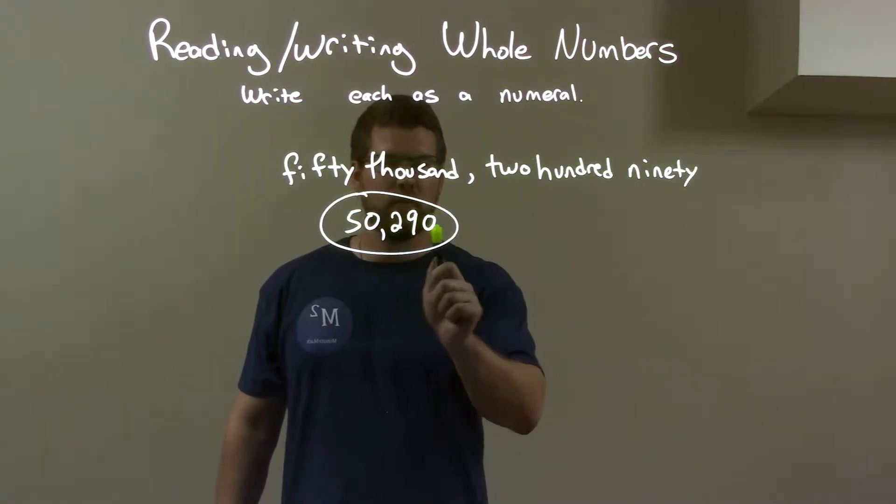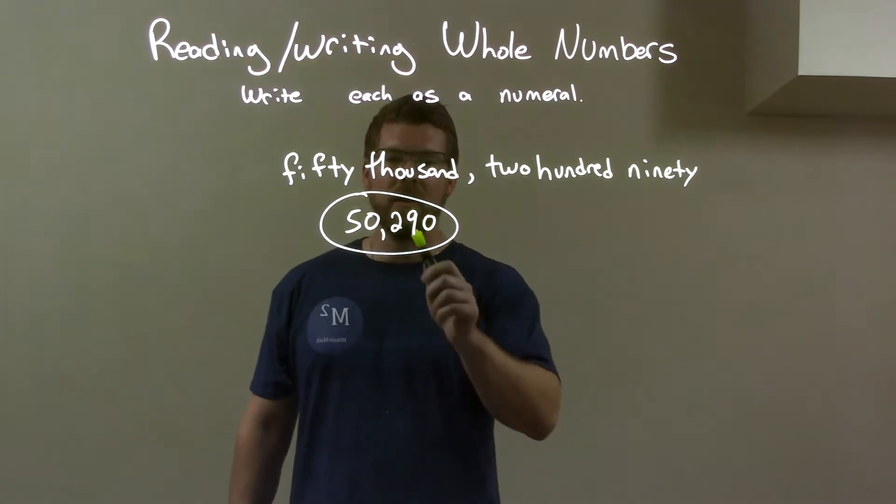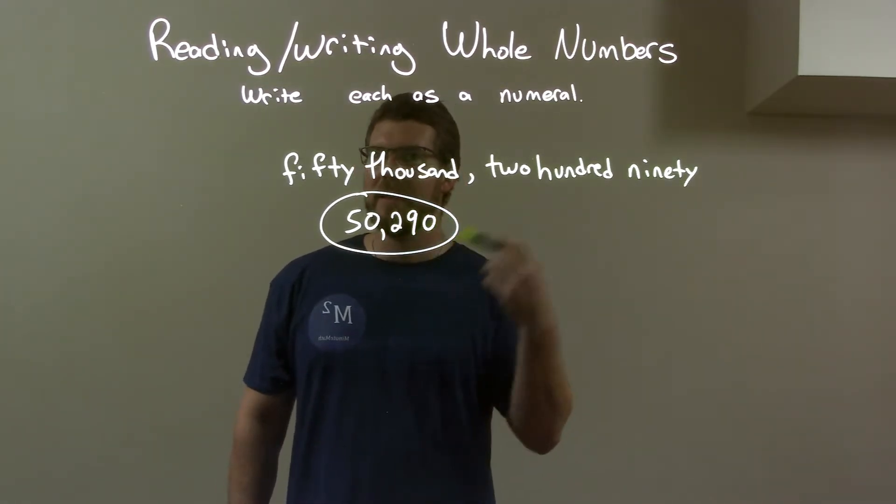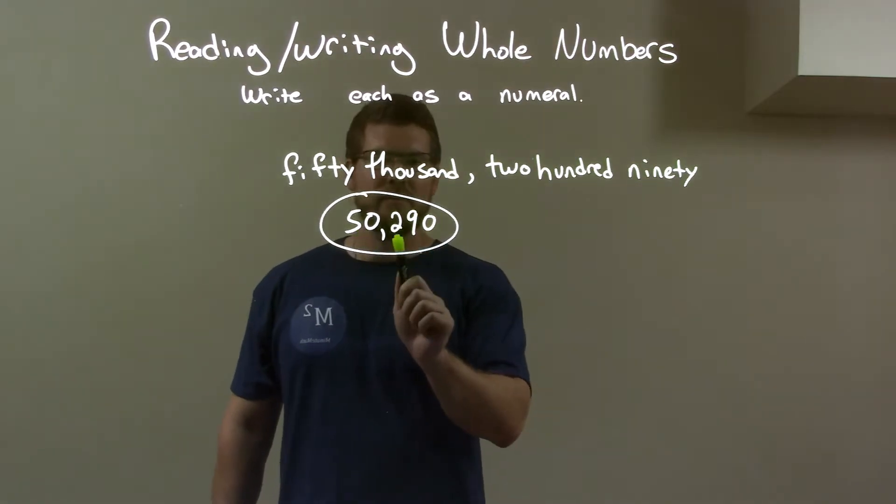Then 200, 2 with two spaces afterwards. Then 90, 9 with one space afterwards. But there's nothing else, so we keep it at zero. And there we have 50,290.